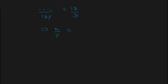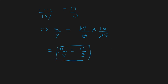Cross multiplying the terms, we get x upon y equals 17 upon 3 multiplied by 16 upon 17. The 17s cancel out, and the remaining answer is x upon y equals 16 upon 3. So the original fraction is 16 upon 3.